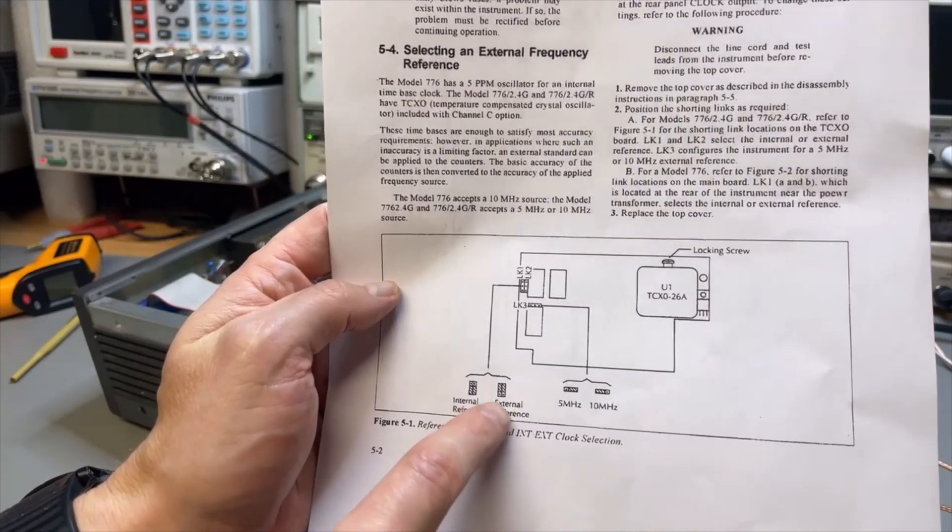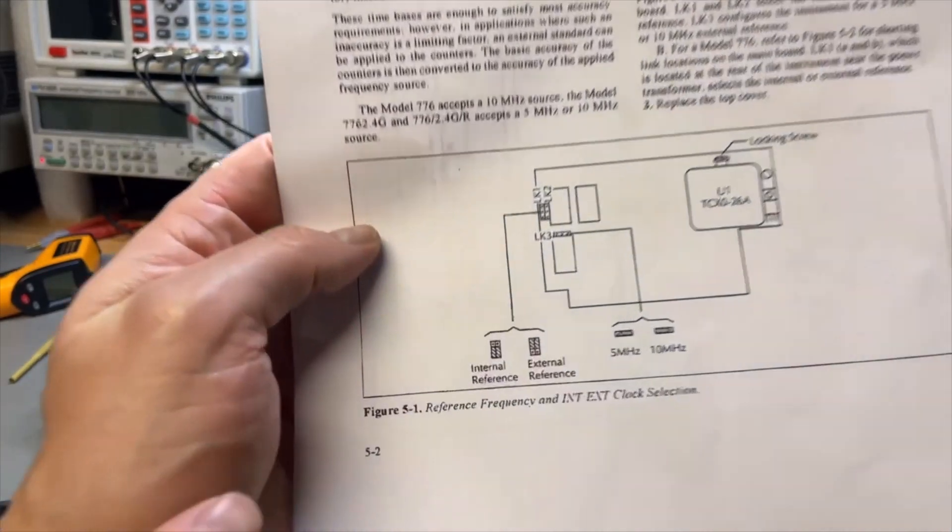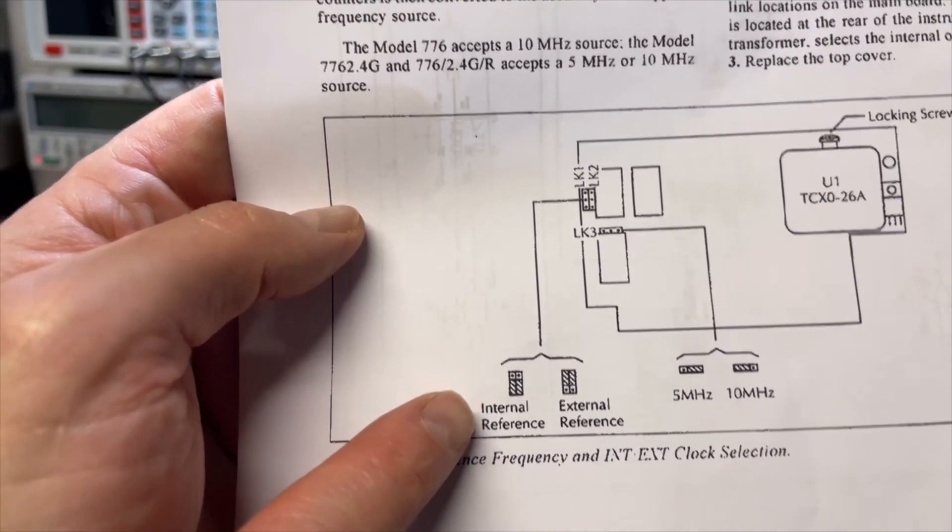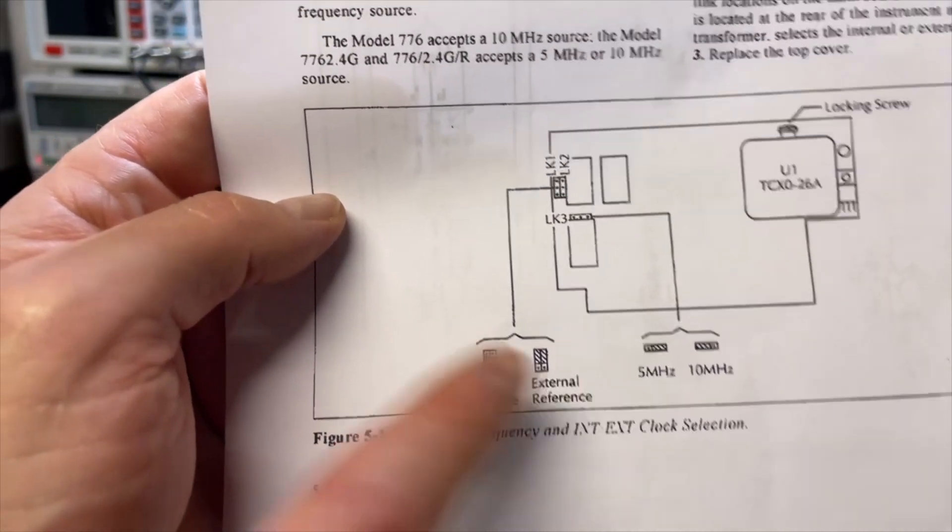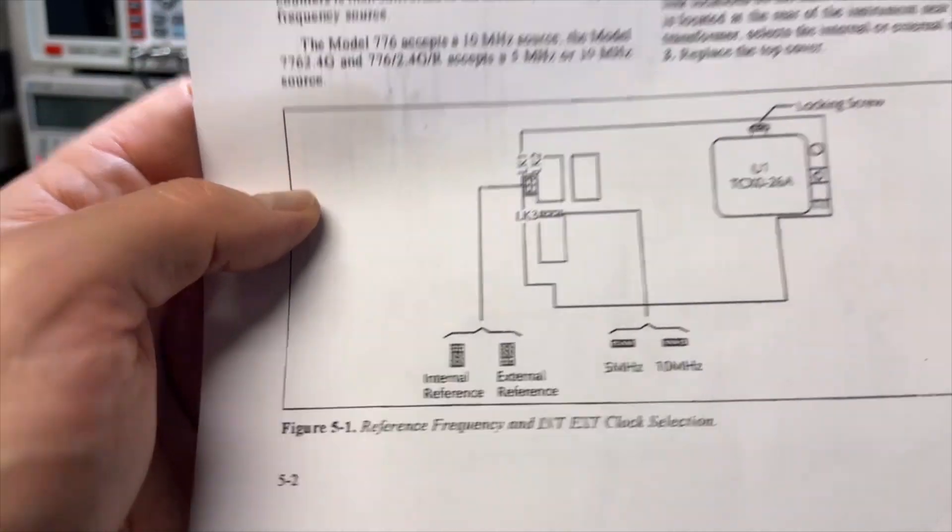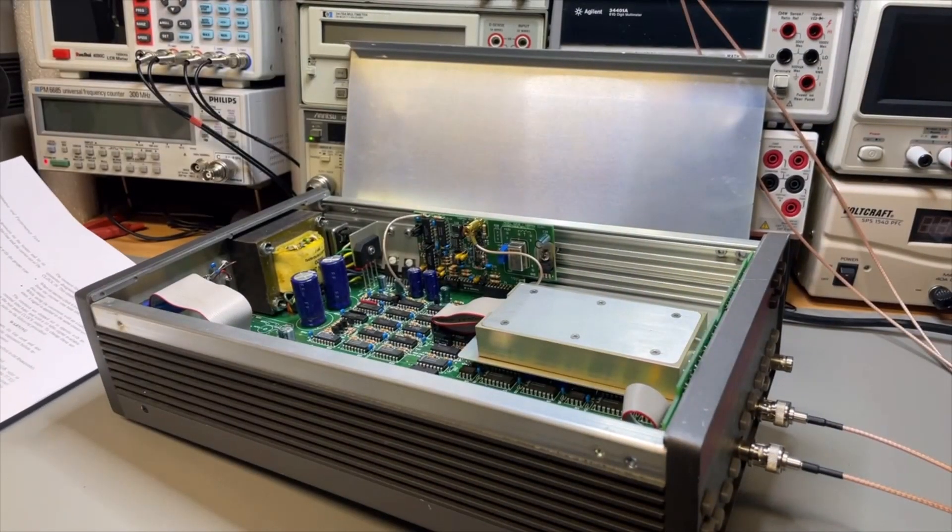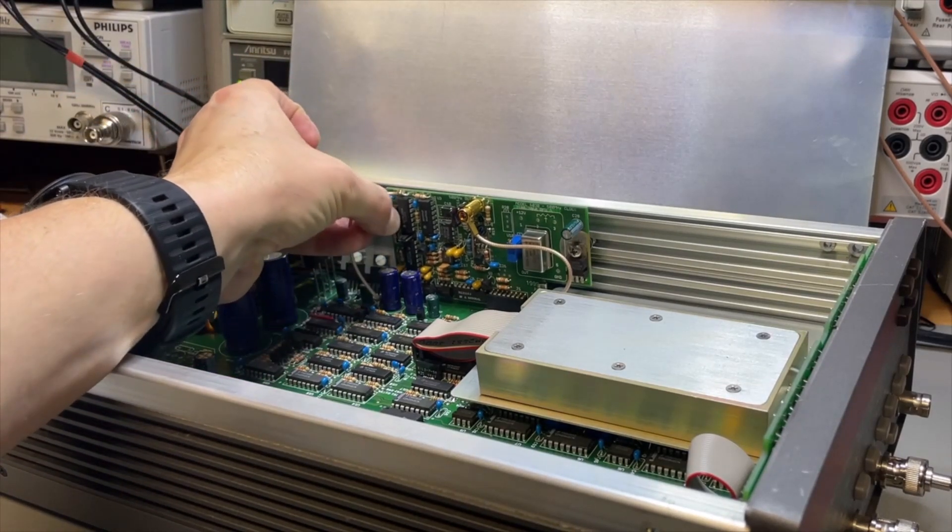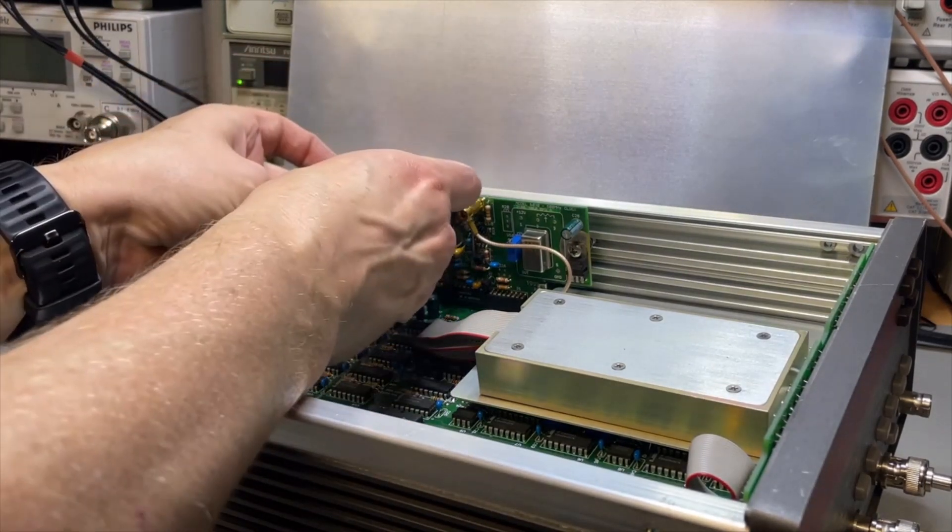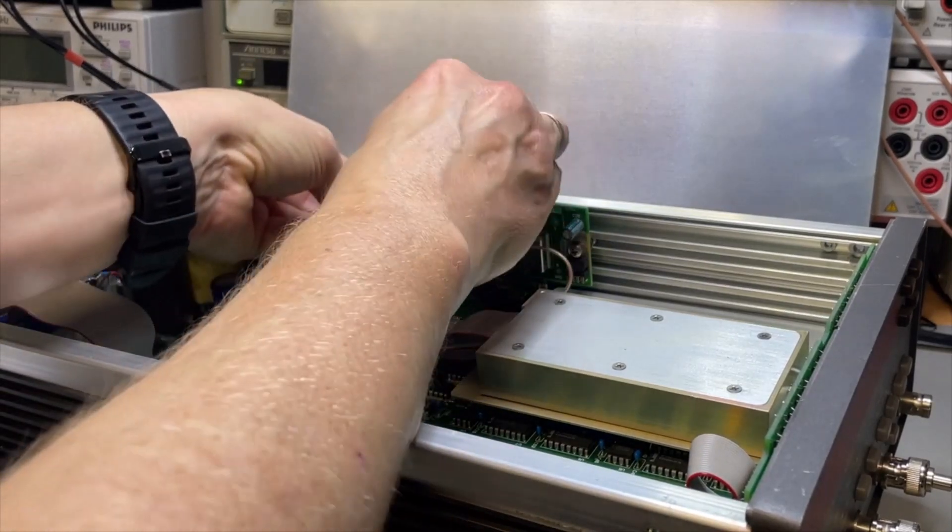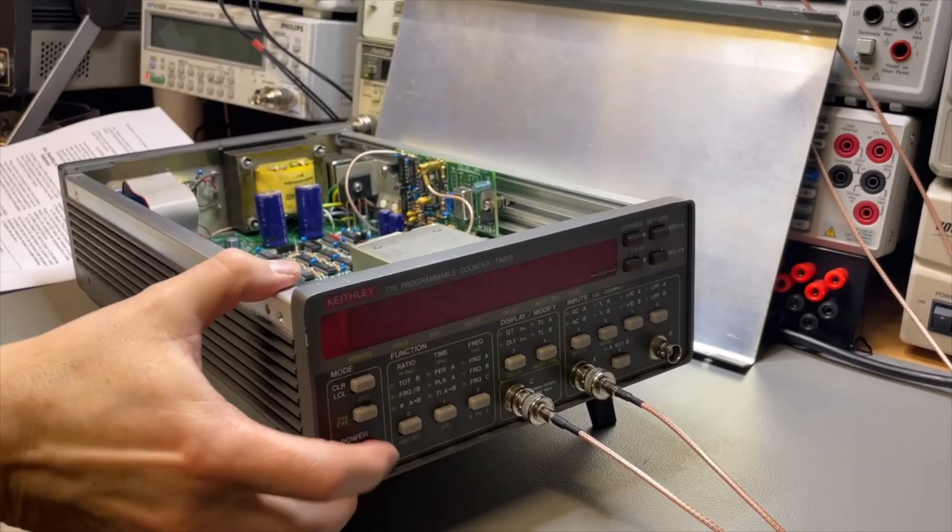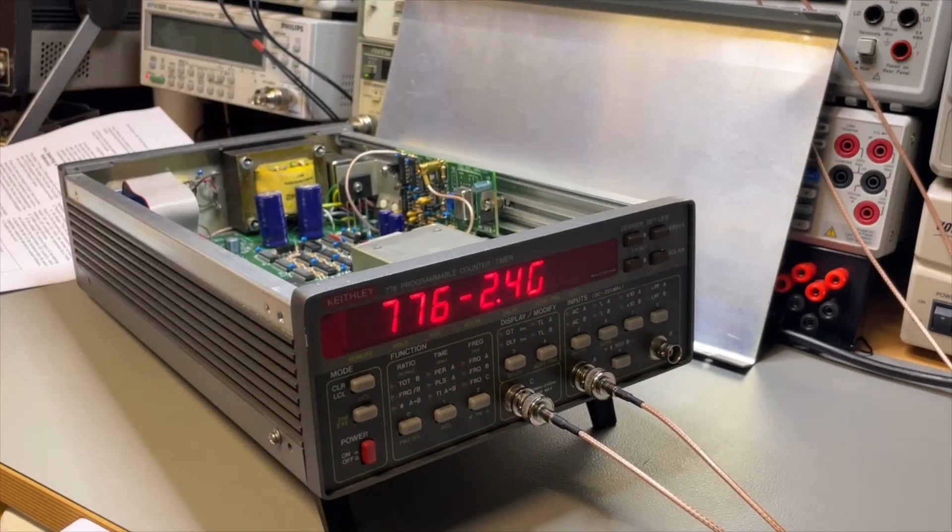Documentation is very good. Just says up for external, down, that's the current position for internal. So let's try what it does on external reference. And I switched it off. So let's just pull the jumpers and move them up.